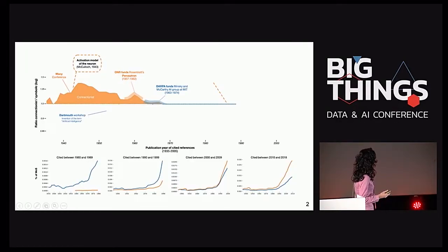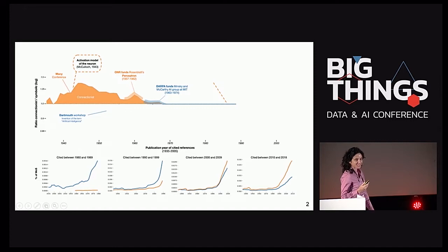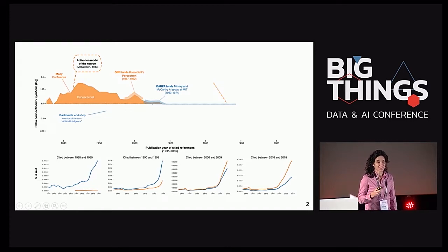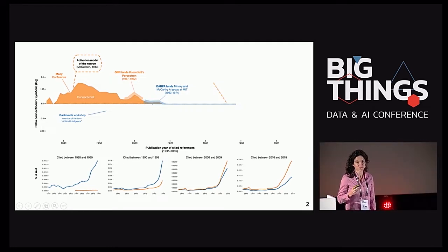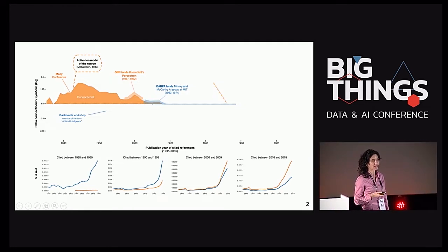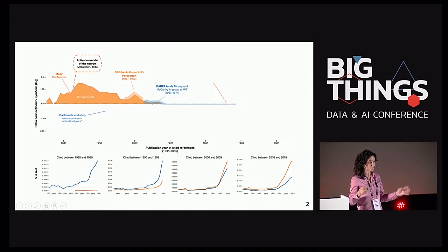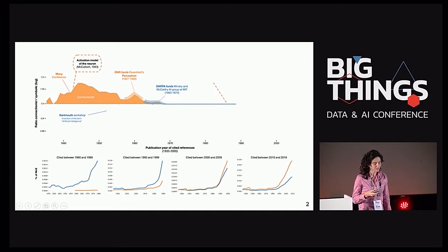Como sabéis, la inteligencia artificial ya empezó desde el siglo pasado. Hay dos corrientes fundamentales, que es la conectivista y la simbólica, y han ido confrontándose, pero sin embargo cada una de ellas ha aportado.